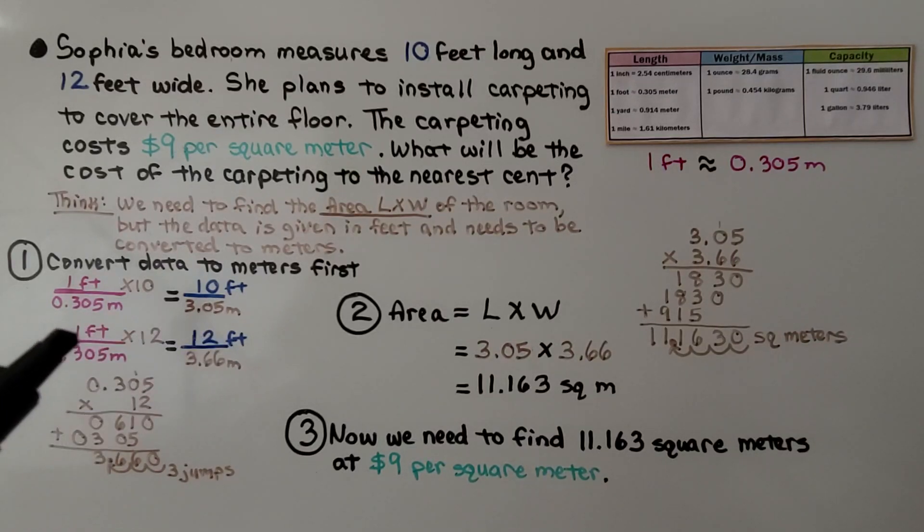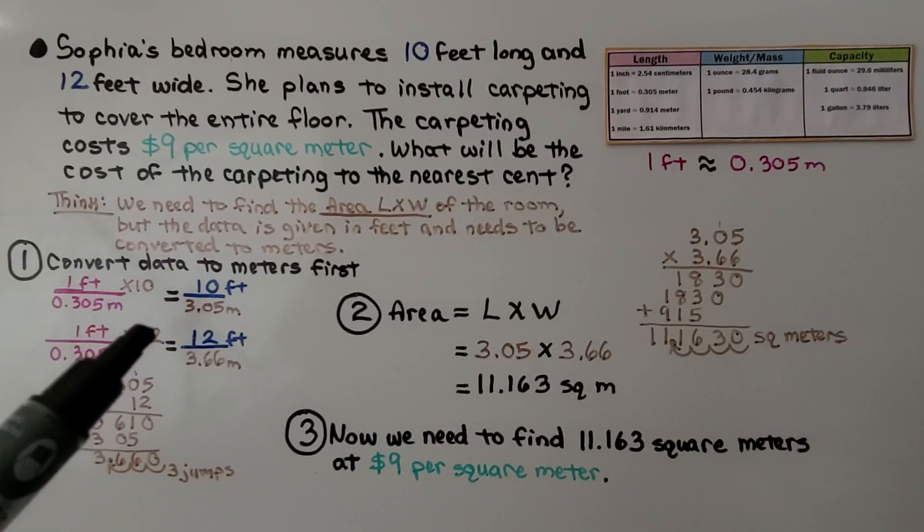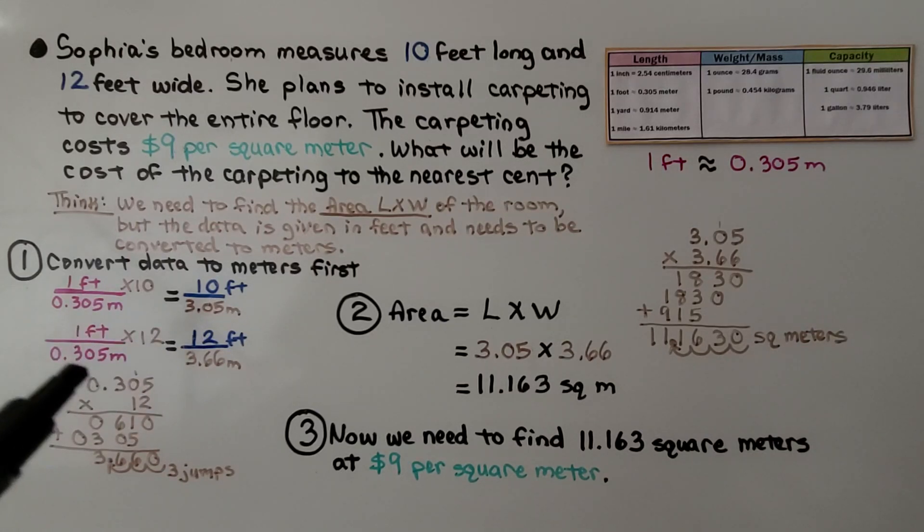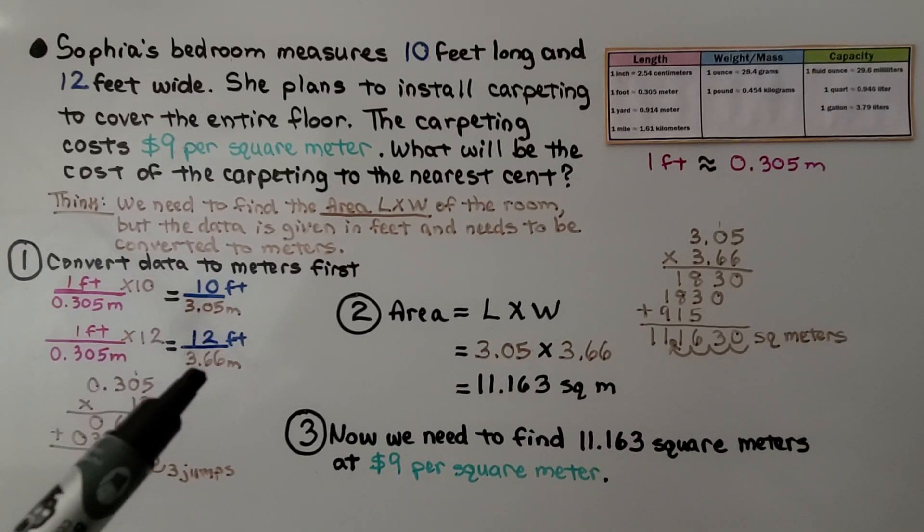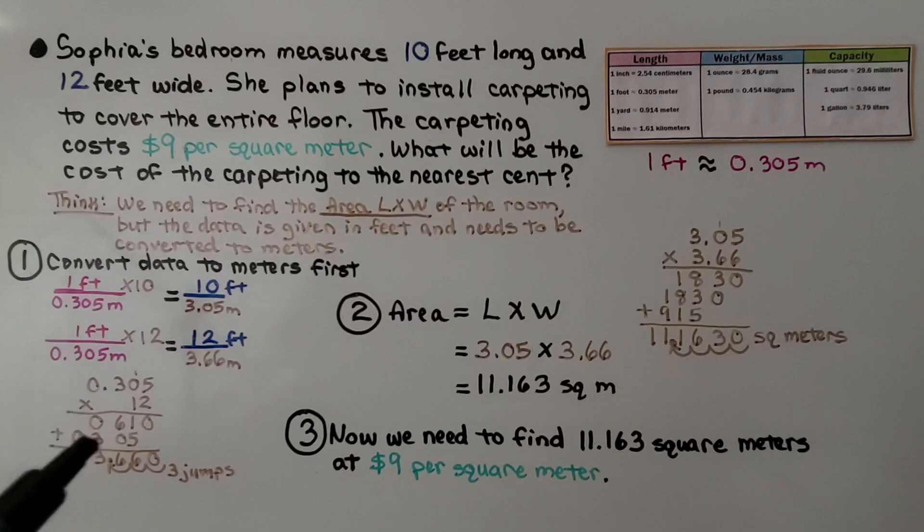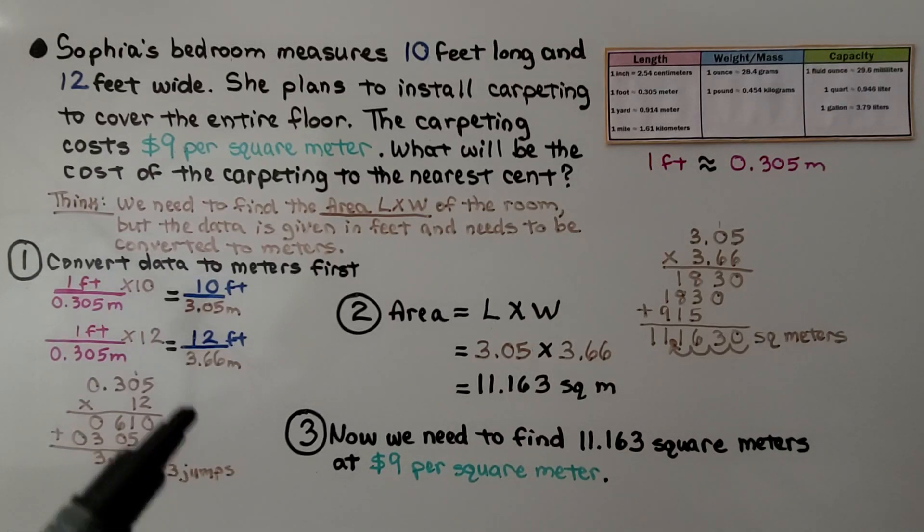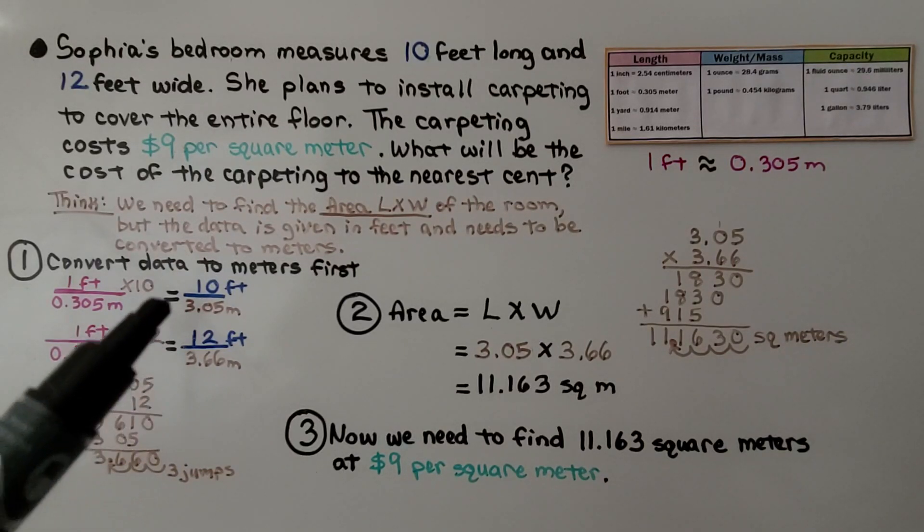To go to 12 feet, we need to multiply this 1 foot times 12, which means we need to multiply this times 12. And we do a little multiplication on the side, and there are 1, 2, 3 jumps in the equation. So we're going to put 3 jumps into the product, and we get 3.66 meters. So now we know the length and width in meters.